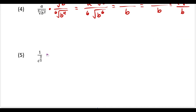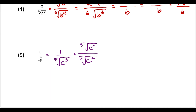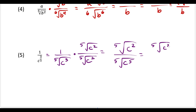For the final example, one option is to write the denominator as the 5th root of c to the 3rd power in radical form, so we can apply our rule. We multiply the bottom by the 5th root of c squared, since 3 plus 2 equals 5, matching the index. We multiply the top by the same thing. On top we get 1 times the 5th root of c squared, and on the bottom we get the 5th root of c to the 5th, which simplifies to c. So our final answer is the 5th root of c squared over c.